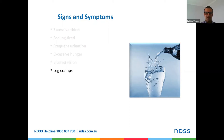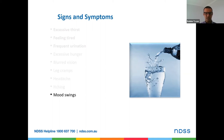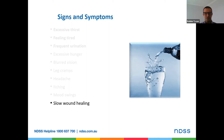Leg cramps can occur due to a decrease in blood flow, as the blood becomes a little thicker with excess glucose. Headaches are common as well, along with itching on the skin, mood swings — which can go hand in hand with the hunger. Excess glucose is a fuel for bacteria, so it promotes bacterial growth, slows wound healing, and this is commonly seen with issues with the feet. Repeated infections also occur because that glucose feeds the bacteria.